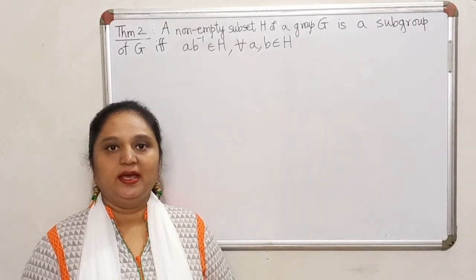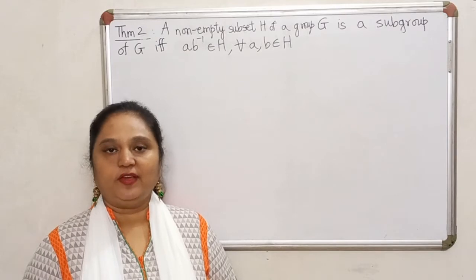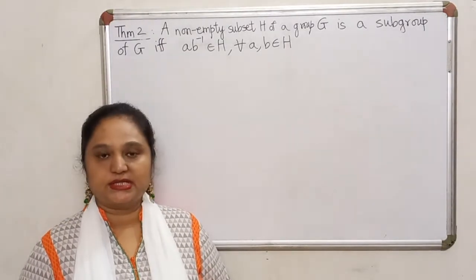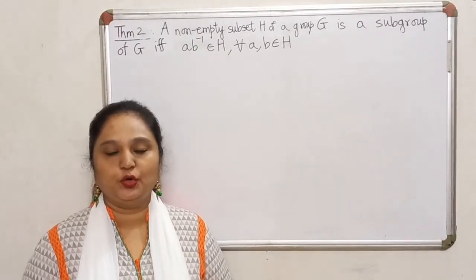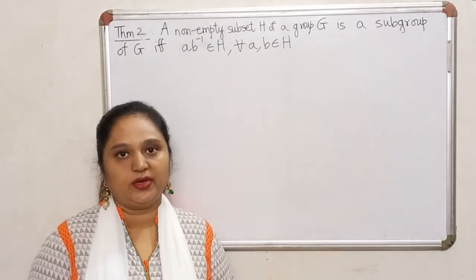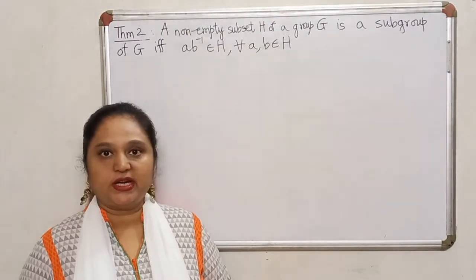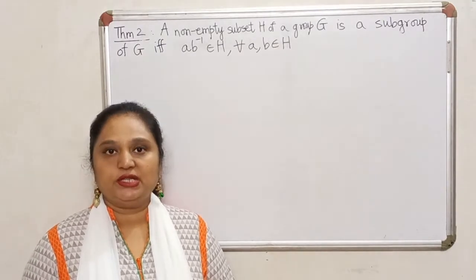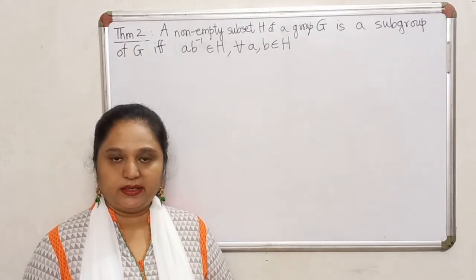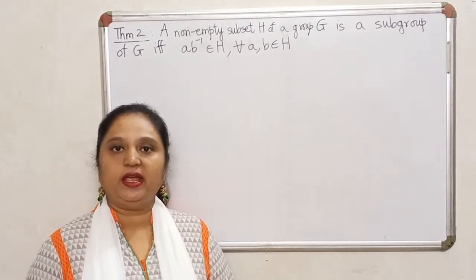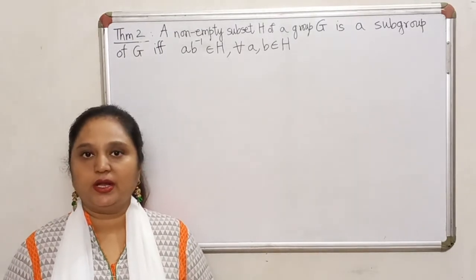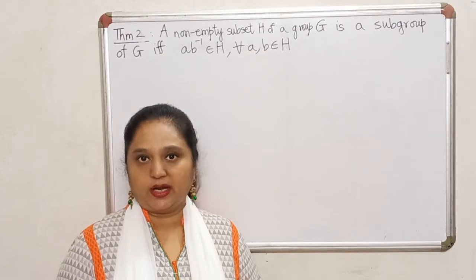Hello students. In the last lecture we saw two necessary and sufficient conditions for a subset to become a subgroup. In Theorem 1, since the associative property is inherited, we need to check: closure property for H, identity must be in H, and every element in H must have an inverse in H. So if you use Theorem 1, you need to verify three conditions.